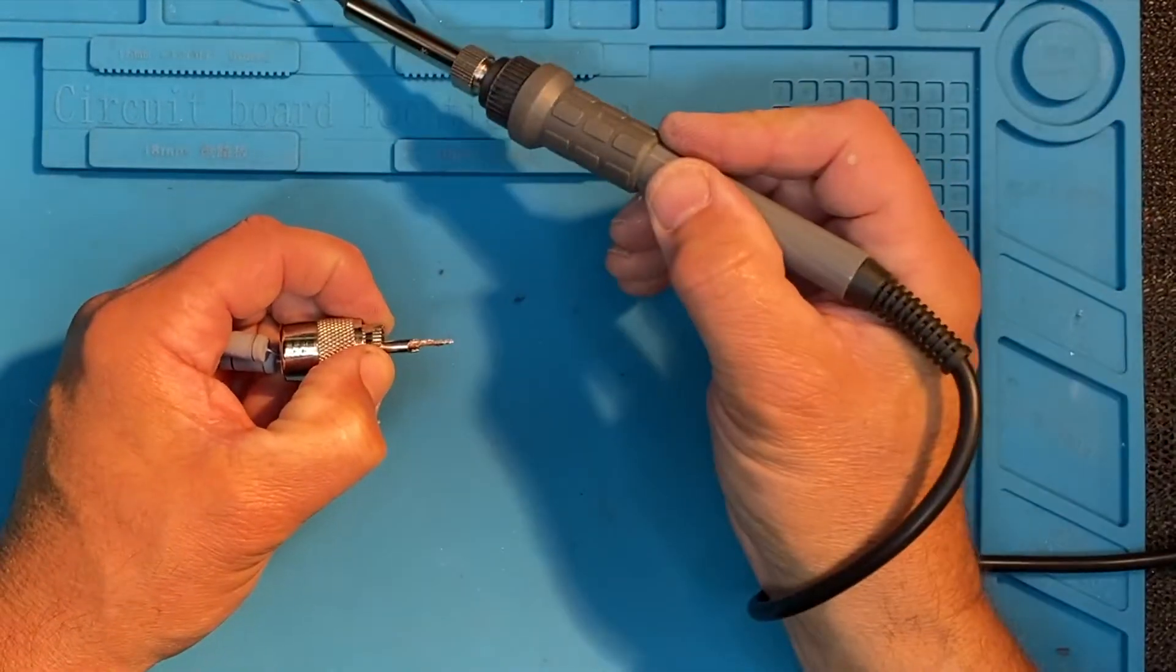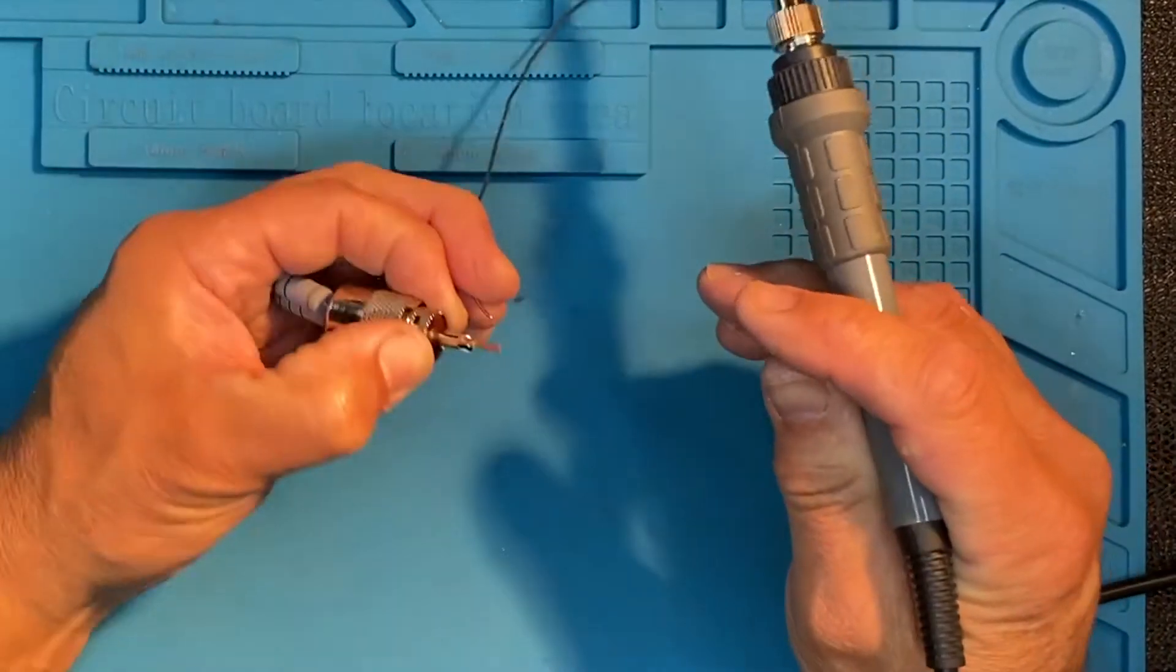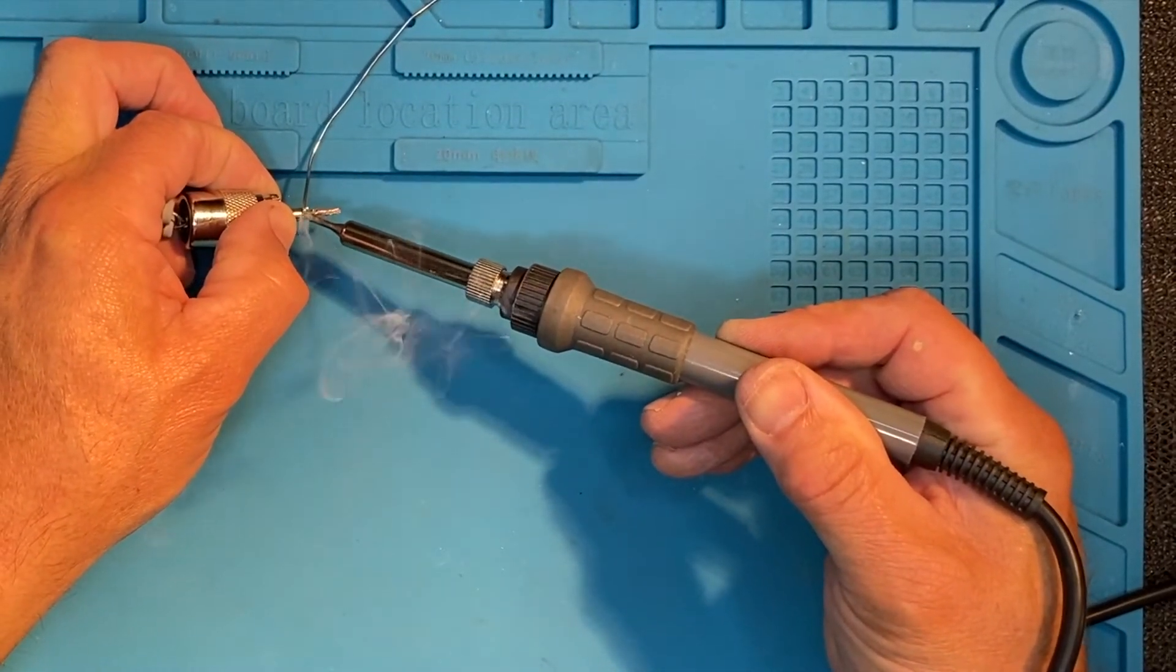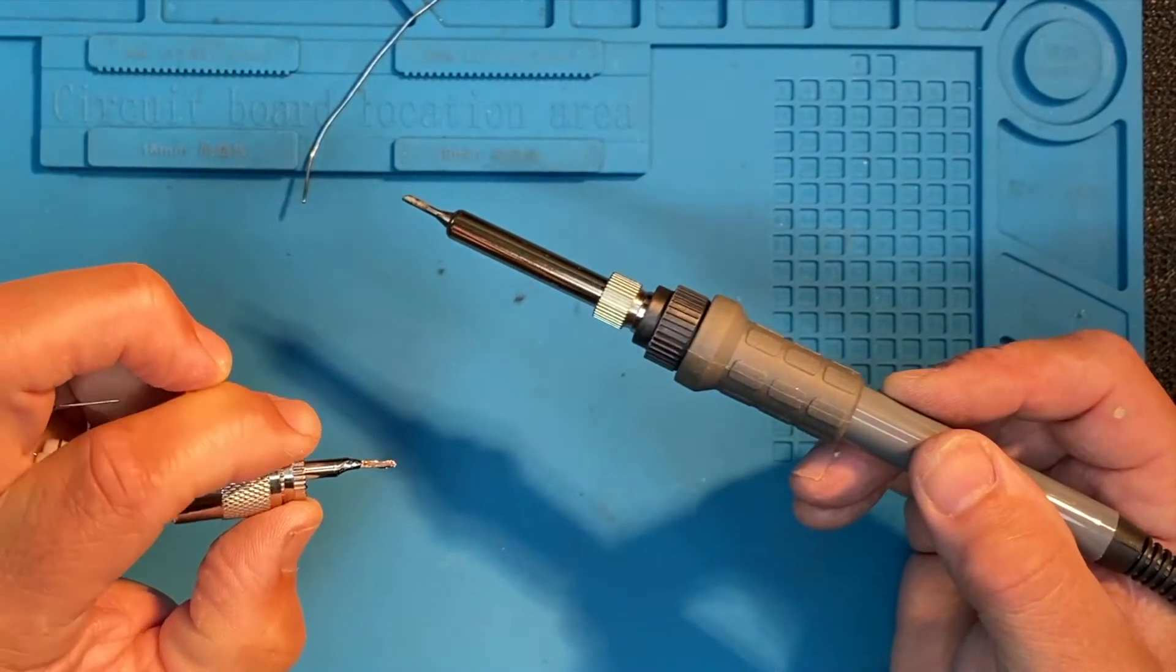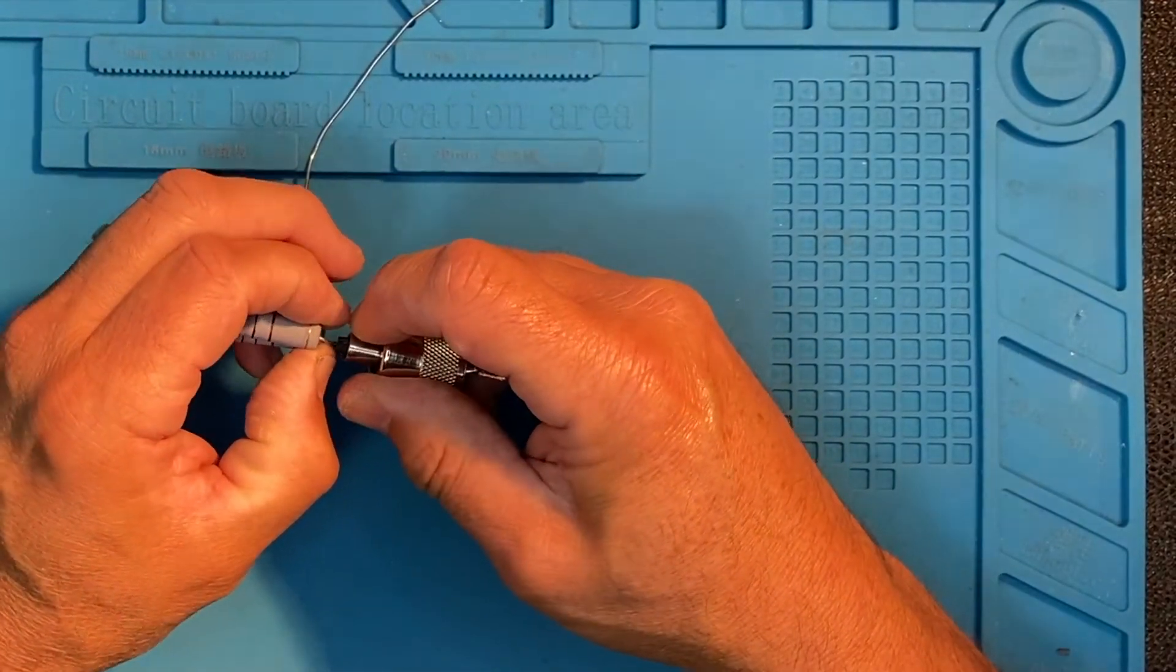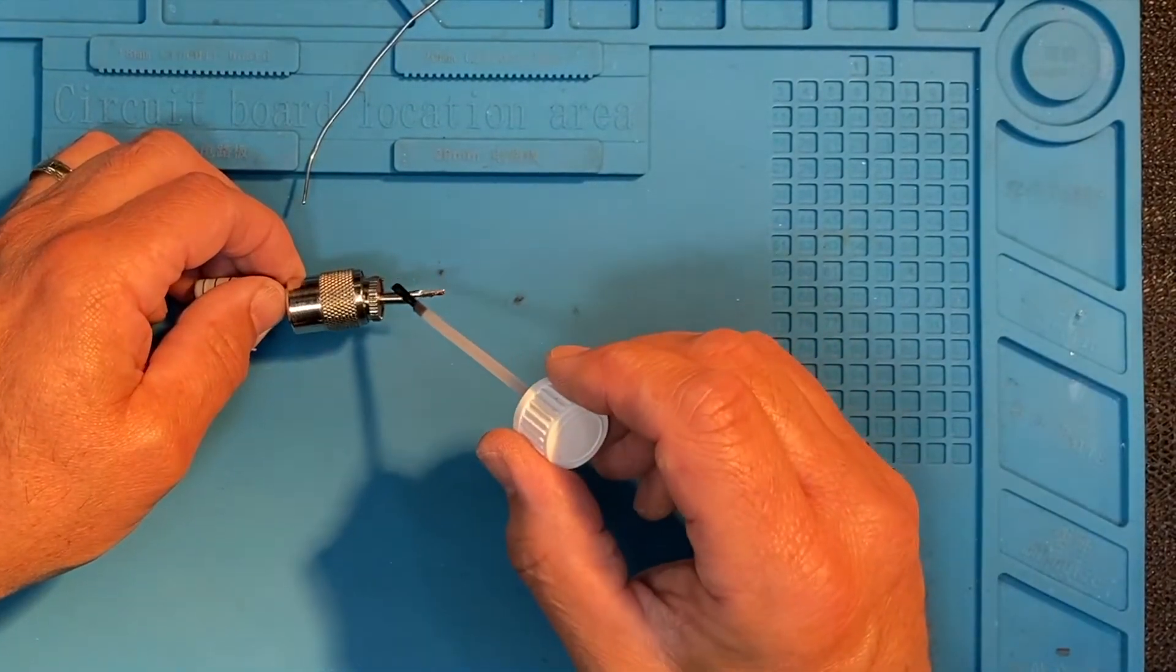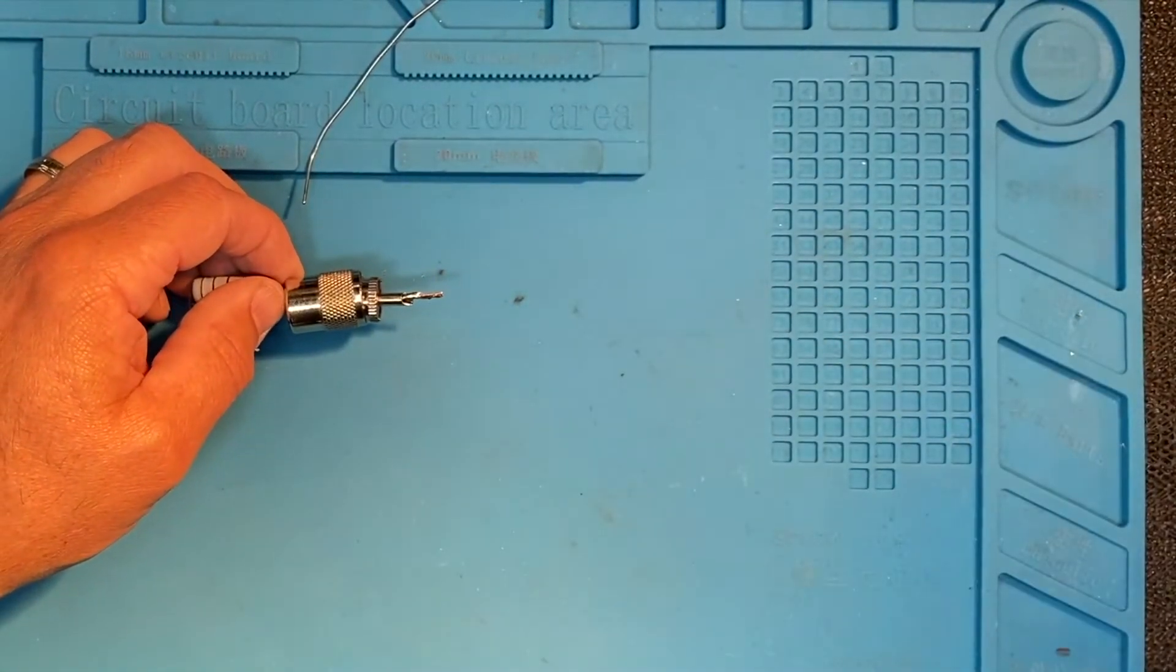Just going to tap this in position. There's probably an easier way to do this, but as normal I'm finding the hard way. Just going to add a bit of flux so it flows in a bit, and I'm going to put some more solder in. Just a drop of liquid flux.